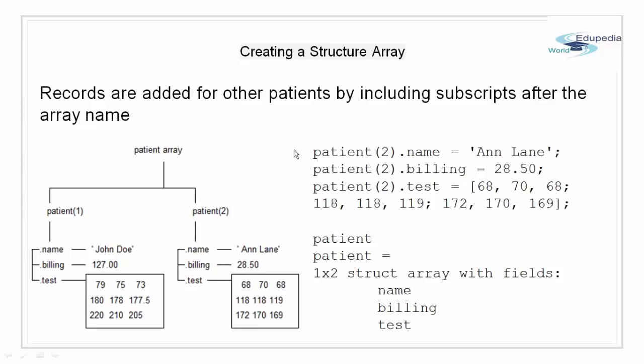We can add records for other patients to the array by including subscripts after the array name. As shown here, I have used subscript 2 to add another set of fields of name, billing and test result with some name and billing amount and some test data. When we display the structure patient in command line, we get a 1 cross 2 structure array with fields name, billing and test.